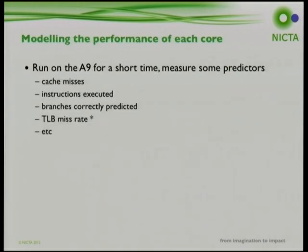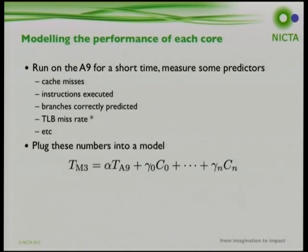We explored modeling performance using a linear model based on parameters collected on the A9s, such as cache misses and number of instructions executed, to predict what would happen if a task migrated to the M3. This is a typical academic approach not often done in the real world because generating the model is difficult. The TLB miss rate on the M3 is significant, requiring statistical prediction of what the miss rate would be given a different-sized TLB.